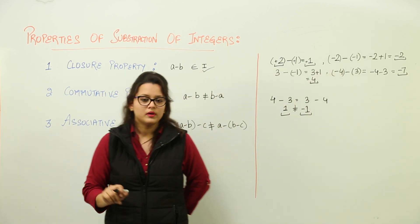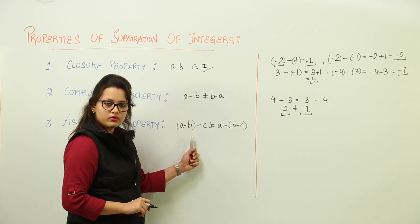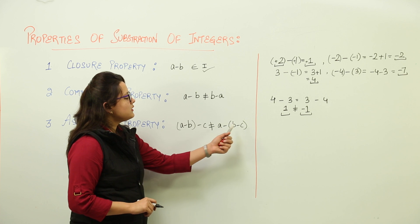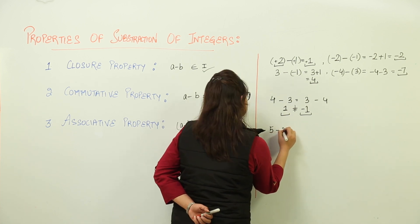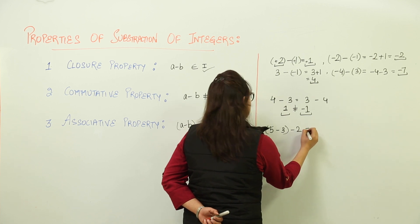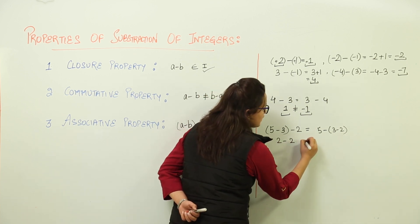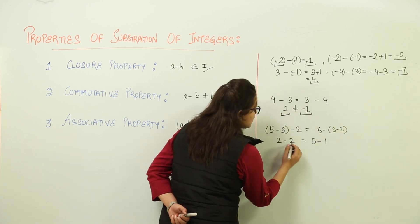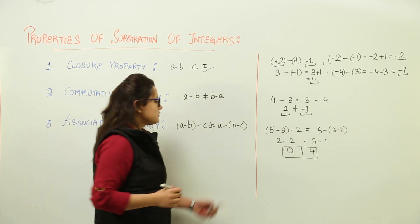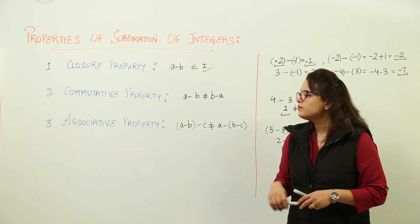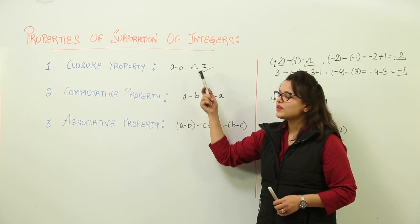The last property is the associative property. For associative property, the subtraction of two integers and then subtracting another integer will not give the same result as subtracting the subtraction of two integers from the first one. Let us say we are doing 5 minus 3 minus 2 in two different groupings. On one side, 5 minus 3 equals 2, then 2 minus 2 equals 0. On the other side, 3 minus 2 equals 1, then 5 minus 1 equals 4. Since 0 does not equal 4, the subtraction of integers is neither commutative nor associative, but it does satisfy the closure property.